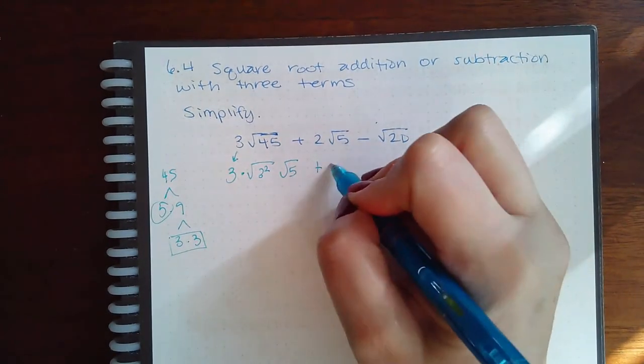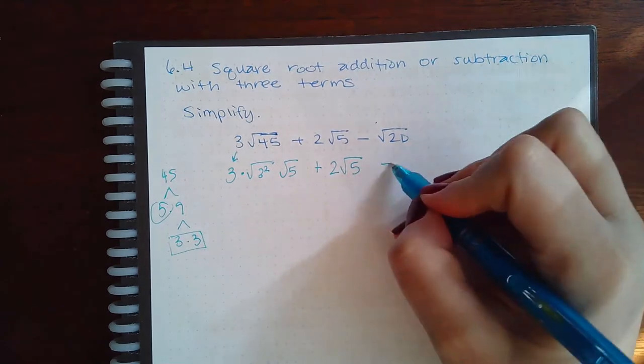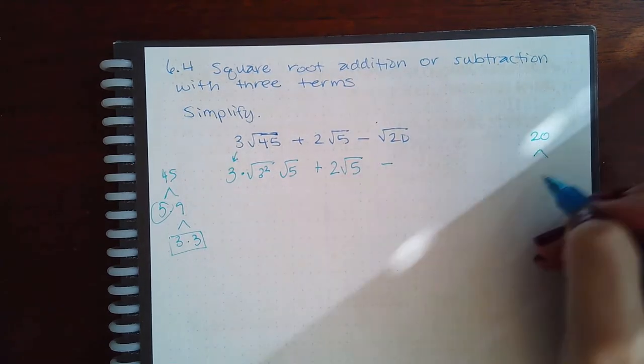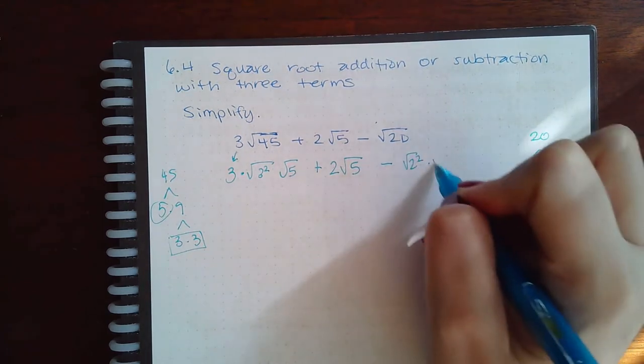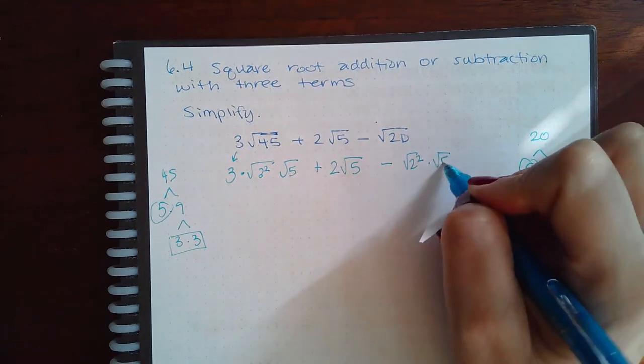Here, 5 is a prime, so that cannot be broken up any further. And then 20, I can take that as 5 times 4, which is 2 times 2. So the pair is the twos. And then you still have this prime left over on the inside.